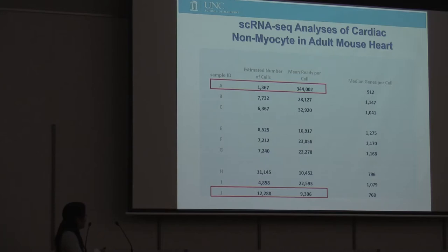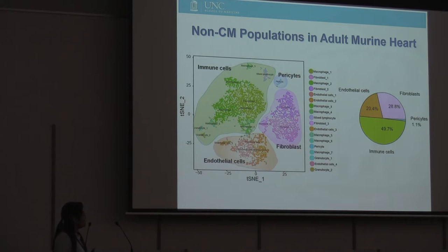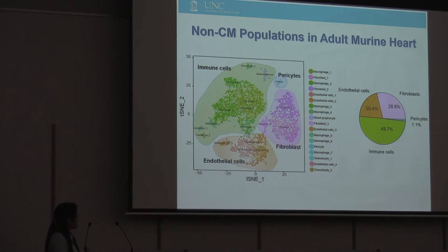In the end, we found that probably the best way to present the data and also validate it is to use one representative heart and validate the clustering and biological findings in other hearts. Here is the single cell RNA-seq from one heart — the most representative one because we can validate all the clustering and markers using cell data from other hearts.